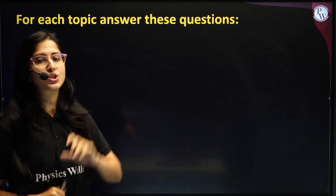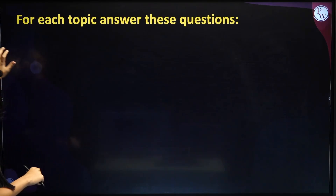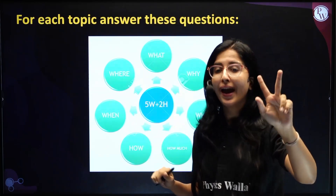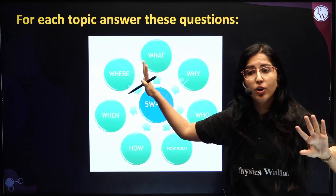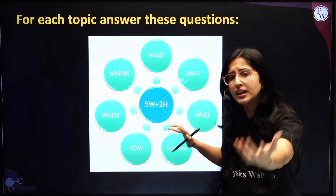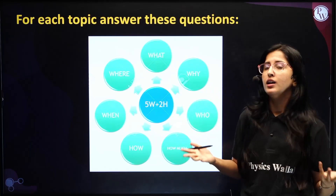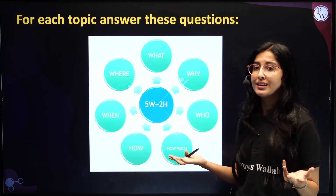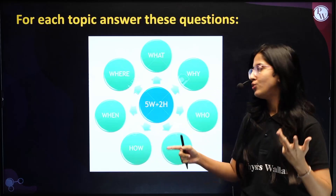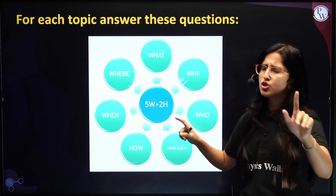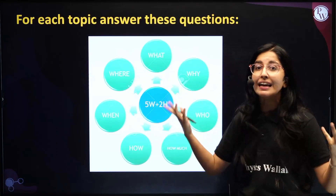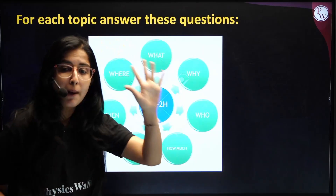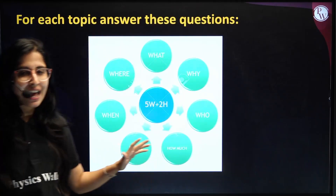For each topic, answer these 5W and 2H questions. For example, for the topic 'Rate of Reaction': What is the rate of reaction? Why do you need it? Who made the formula? How much is it important — especially in biology and chemistry? How does it work? When is it applicable? And where is it used? You should never forget these questions. Once you can answer all of them for a topic, you are good to go.